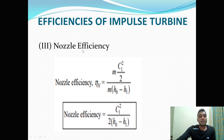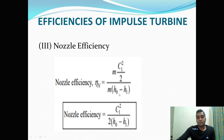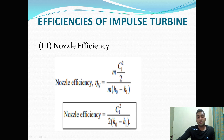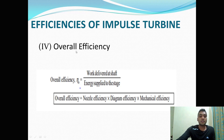The third efficiency is nozzle efficiency. Nozzle efficiency is the ratio of kinetic energy available at the inlet of the nozzle to the enthalpy change at the inlet and the outlet of the nozzle. At the end you will get the formula of nozzle efficiency: C1 squared divided by 2 times the enthalpy change at the inlet and outlet of your nozzle.